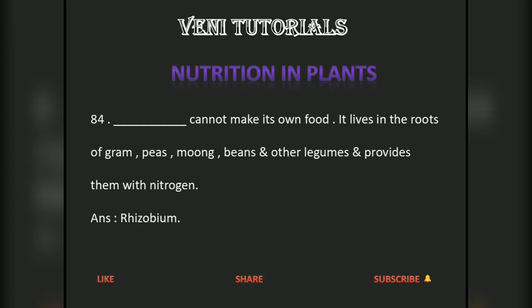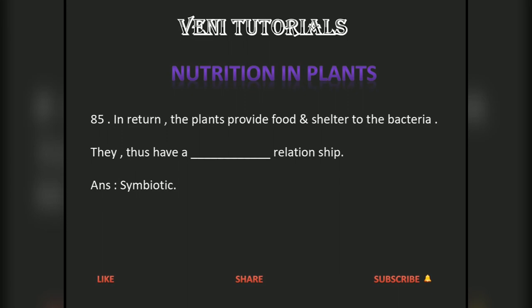Rhizobium cannot make its own food. It lives in the roots of gram, peas, mung beans, and other legumes and provides them with nitrogen. In return, the plants provide food and shelter to the bacteria. They thus have a symbiotic relationship.